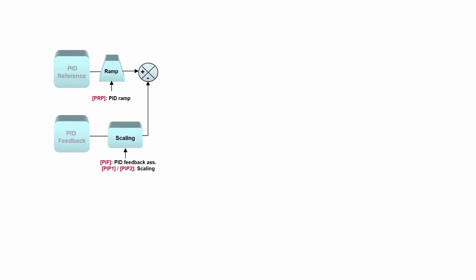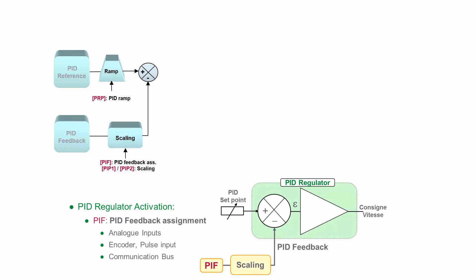Now the first question is how to activate the PID regulator. The PID regulator in the drive is automatically activated when you assign a PID feedback. One important thing to say: the PID regulator inside the drive can only work with variable speed drive.